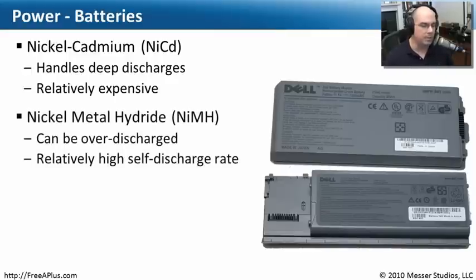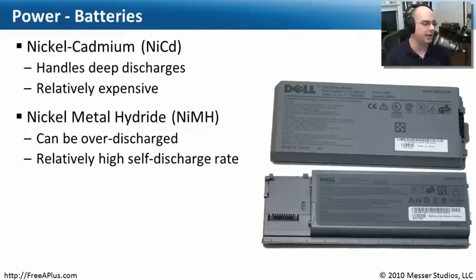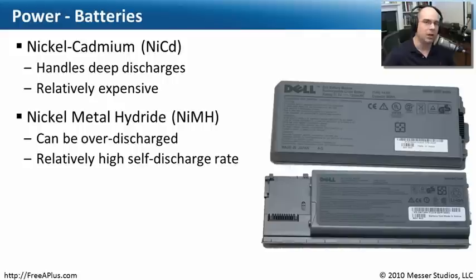Some of the newer modern types of batteries are nickel metal hydride, or NiMH. These can be over-discharged, so you want to be careful that you don't completely lose a charge on these kinds of batteries. They also have a relatively high self-discharge rate, which means you'll charge it up, set it aside, and as soon as you disconnect it from power, it slowly begins losing its charge. You can't put this on a shelf and leave it for a month — when you come back, it's not going to have the charge it did before.